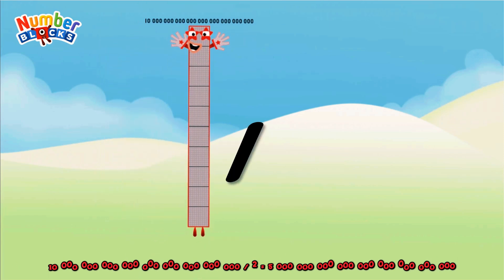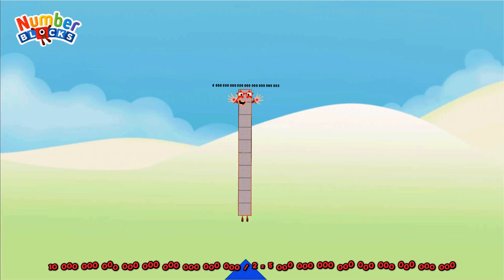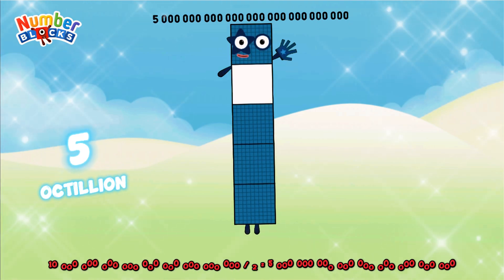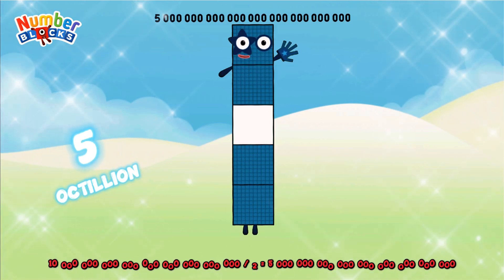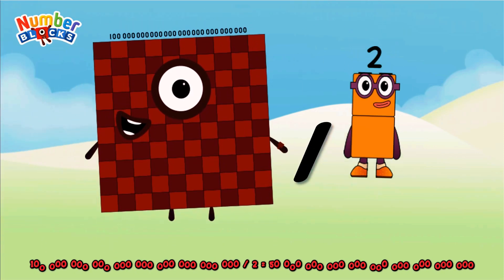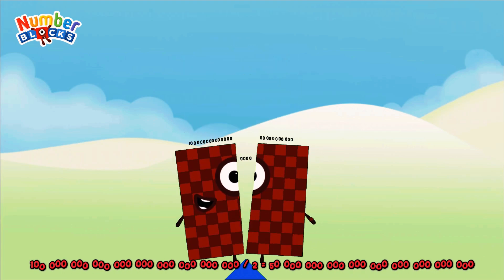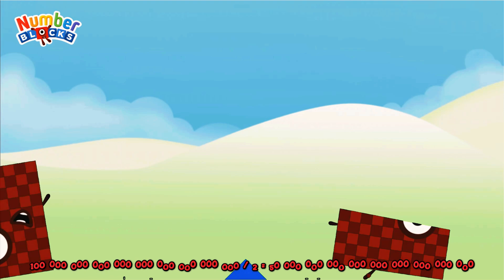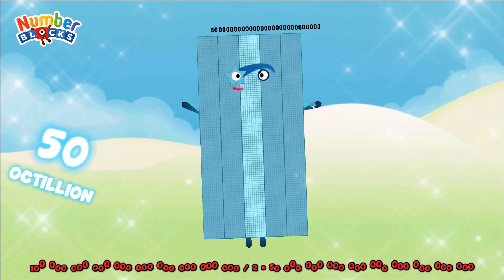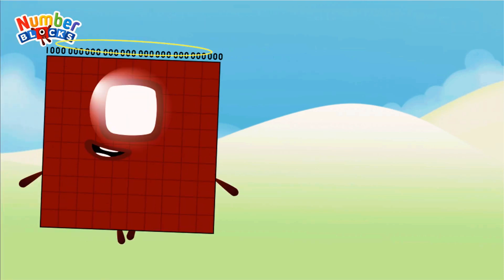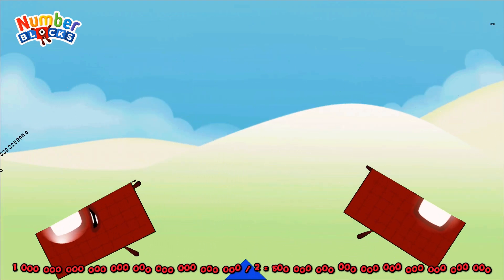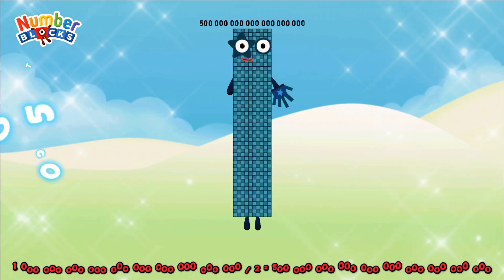Ten octillion divided by two equals 5 octillion. One hundred octillion divided by two equals 50 octillion. One nonillion divided by two equals 500 octillion.